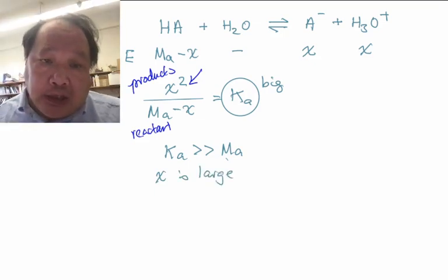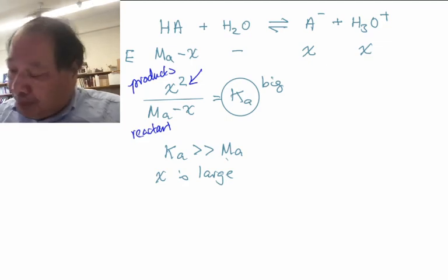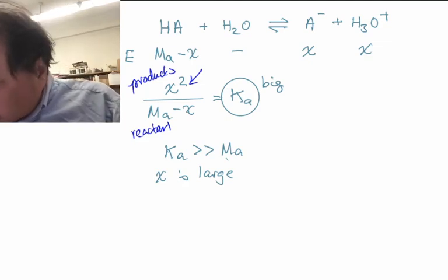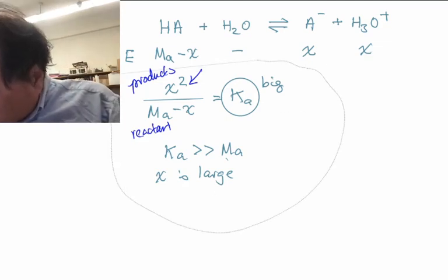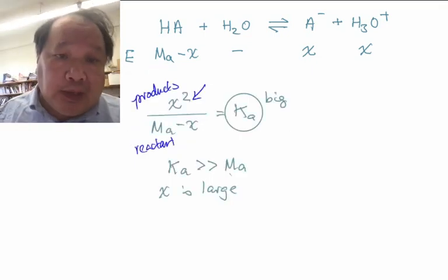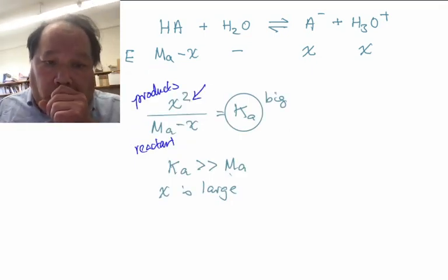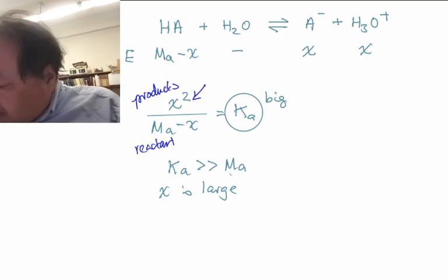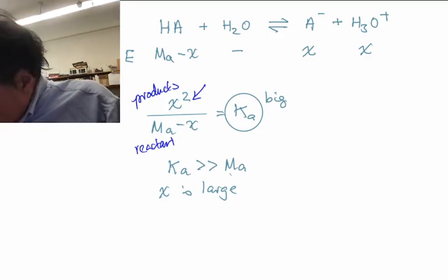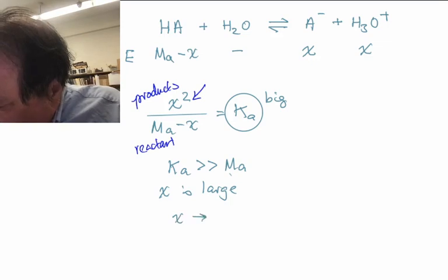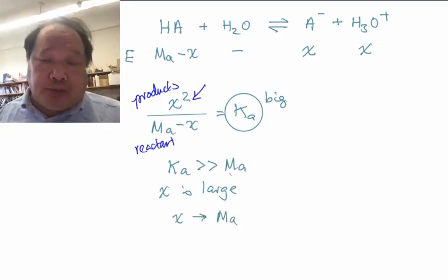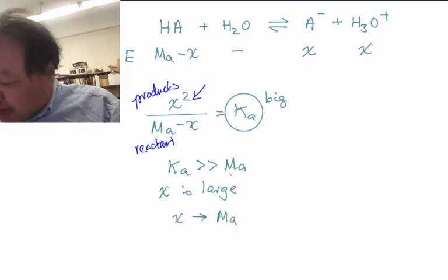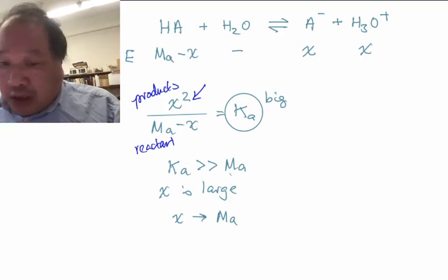The biggest X can get is if it uses up all the reactants, and the initial amount of reactants is Ma, so the biggest X can get is if X approaches Ma itself. It uses up everything that we started with.